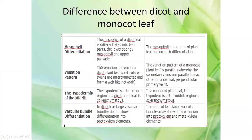Further differences: mesophyll is differentiated into palisade and spongy in dicot leaf, no differentiation in monocot leaf; dicot has reticulate venation and monocot has parallel venation; the hypodermis of the midrib is collenchymatous in dicot leaf and sclerenchymatous in monocot leaf.